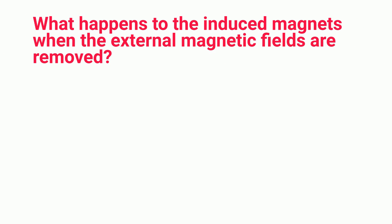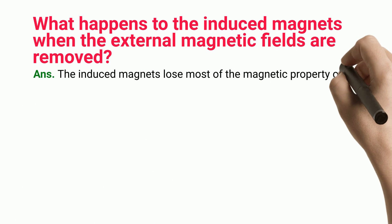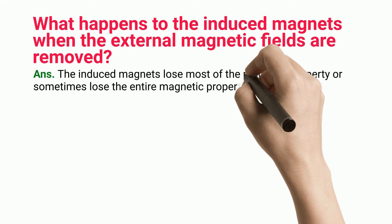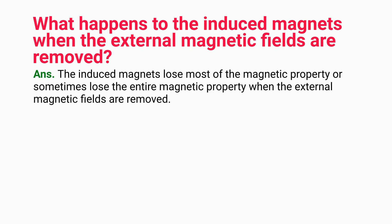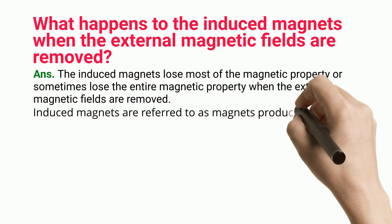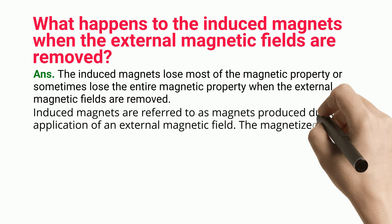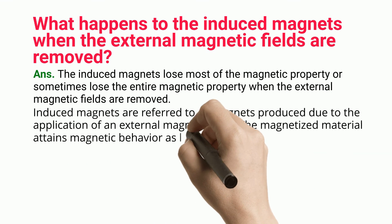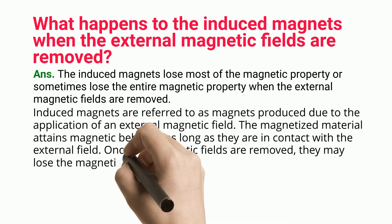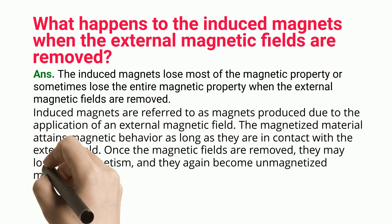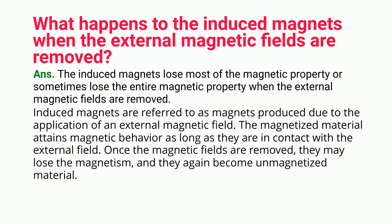What happens to the induced magnets when the external magnetic fields are removed? The induced magnets lose most of their magnetic property, or sometimes lose the entire magnetic property, when the external magnetic fields are removed. Induced magnets are produced due to the application of an external magnetic field. The magnetized material attains magnetic behavior as long as it is in contact with the external field. Once the magnetic fields are removed, it may lose the magnetism and again become unmagnetized material.